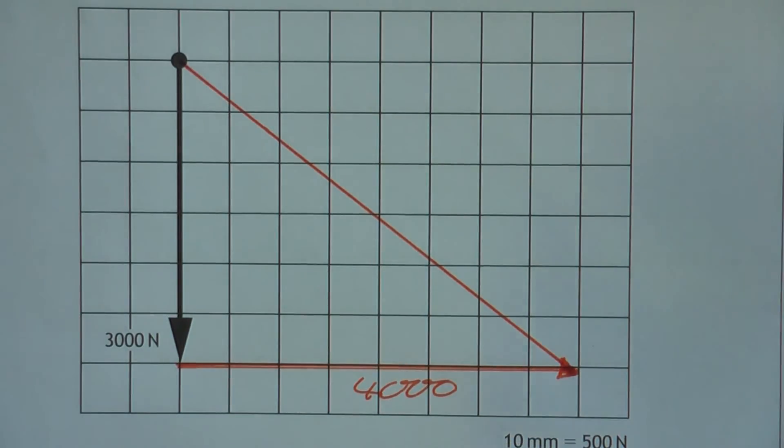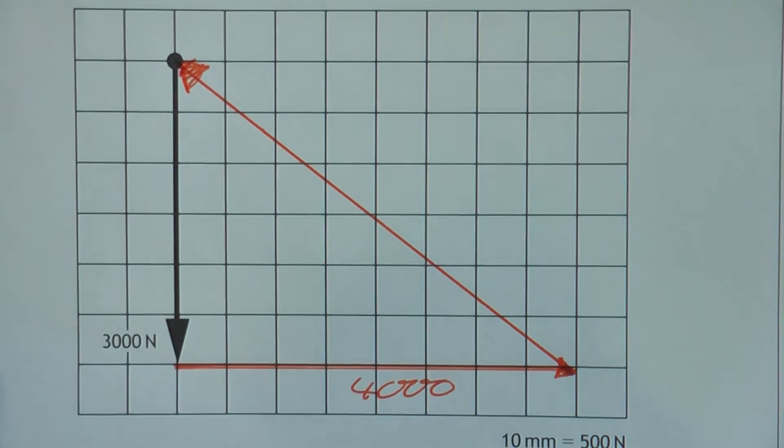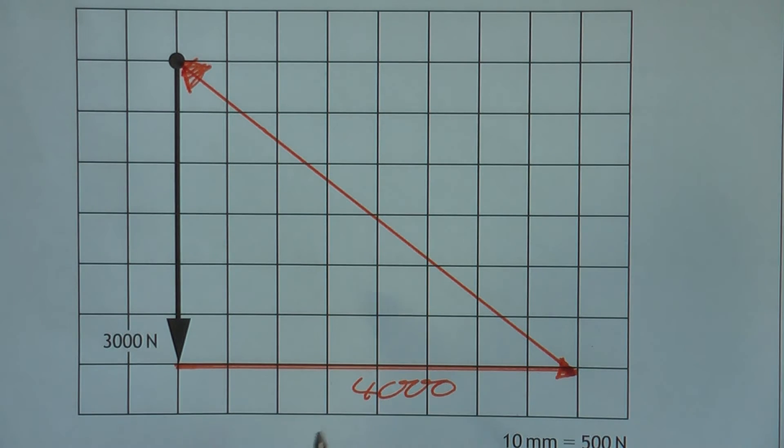So it was F we wanted to find. So there is F there. So we can use Pythagoras. 3,000 squared plus 4,000 squared equals, and then do the square root of your answer.